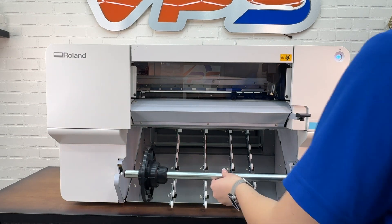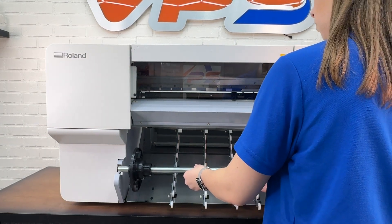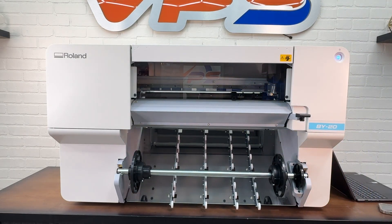The last thing we're going to want to physically do on the machine before we start with our ink fill up process is to put our media roller bar onto the machine.